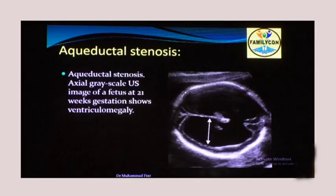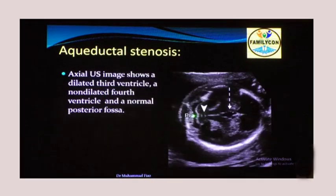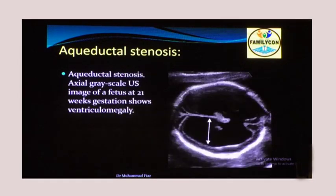This case shows gross ventriculomegaly, but on further images the fourth ventricle was collapsed — this was a case of aqueduct stenosis. The fourth ventricle is hardly visible, the third ventricle is also dilated, and the lateral ventricles were dilated. This is a typical case of aqueduct stenosis.